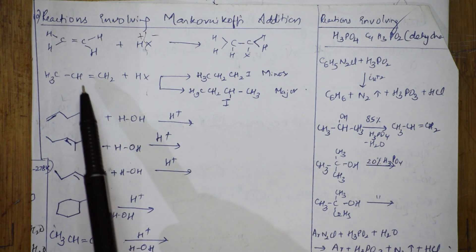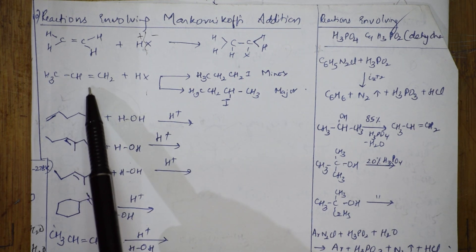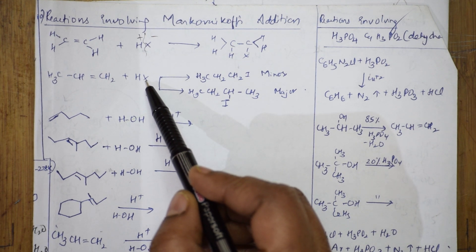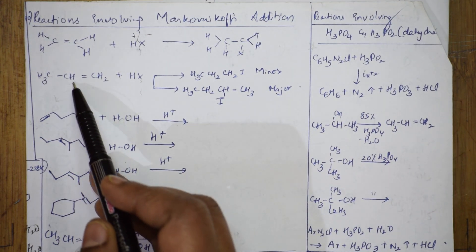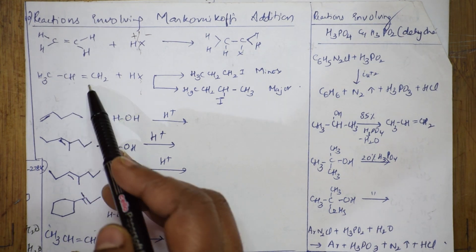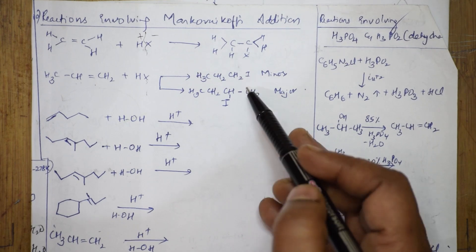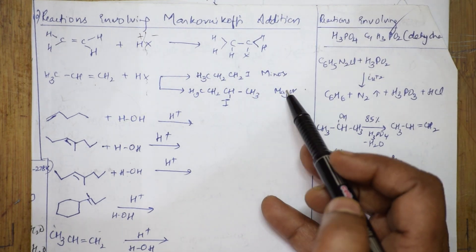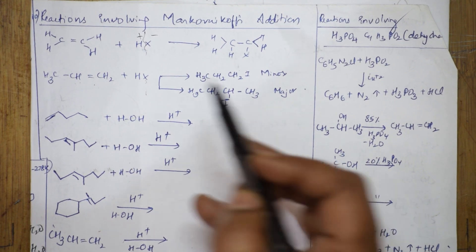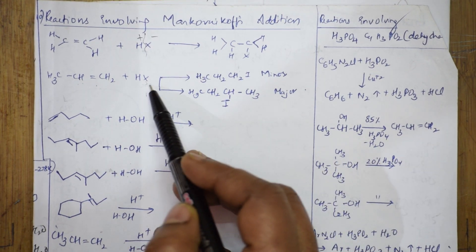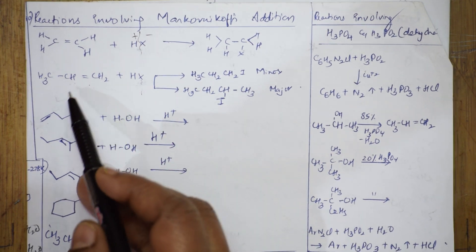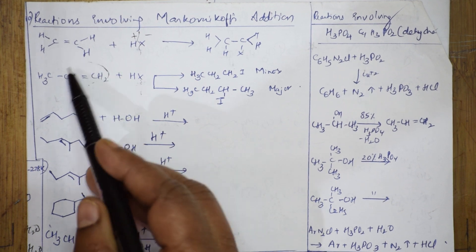When you have an unsymmetrical alkene, the most important thing is: the negative addendum, or the negative part, adds to the carbon having the lesser number of hydrogens. You will be getting two products — one is a major product and one is a minor product. The negative addendum adds to the carbon with lesser hydrogens around the double bond.